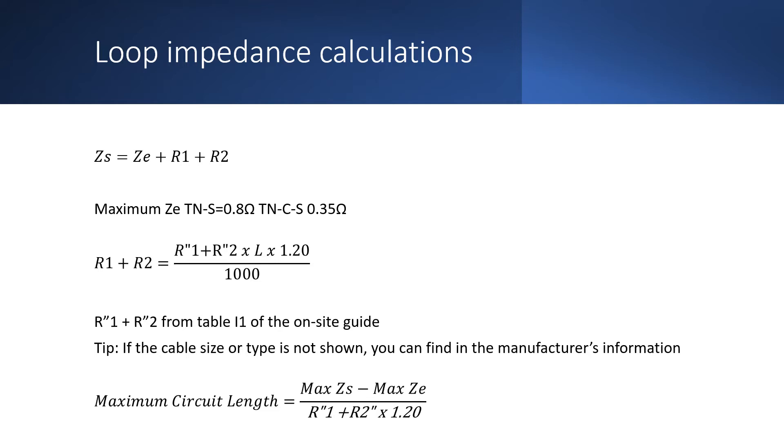This is useful if you want to use an SWA cable and you need to know the impedance value for the line conductor, but also the impedance of the steel wire armour. If you would like to know more about using SWA or CPC, please see the link to the video at the top of the screen.